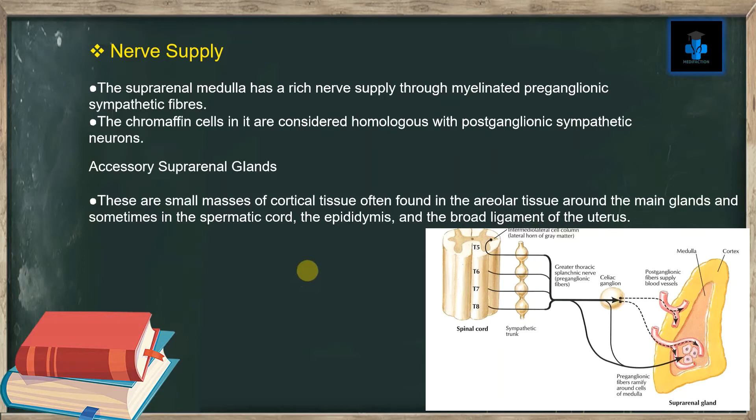Accessory suprarenal glands: These are small masses of cortical tissue often found in the areolar tissue around the main glands, and sometimes in the spermatic cord, the epididymis, and the broad ligament of the uterus.